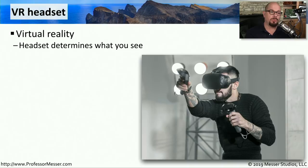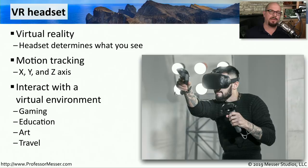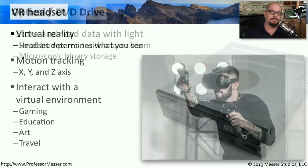A relatively new peripheral is the virtual reality headset. This headset determines everything that we see, effectively putting us into a virtual world. We're able to control the virtual world with motion tracking — not only on our hands, but other parts of our body as well. It's able to track not just the X and Y, but also the Z axis to know exactly what's happening with our body. The technology behind virtual reality is still emerging, but we're seeing VR being used for gaming, education, art, or even travel applications.